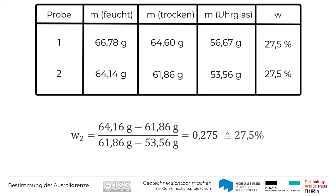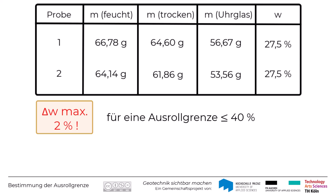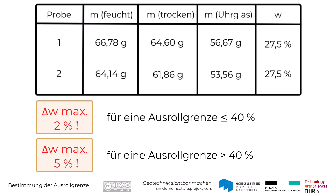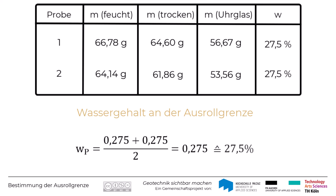Die für die beiden Teilproben ermittelten Wassergehalte dürfen absolut nicht mehr als 2 Prozent voneinander abweichen, zumindest dann, wenn der Wassergehalt an der Ausrollgrenze kleiner gleich 40 Prozent ist. Beziehungsweise sie dürfen nicht mehr als 5 Prozent voneinander abweichen, wenn der Wassergehalt an der Ausrollgrenze größer als 40 Prozent ist. Ansonsten muss der Versuch wiederholt werden. Wenn das nicht der Fall ist, berechnet sich der Wassergehalt der Ausrollgrenze Wp als Mittelwert aus den beiden Einzelwassergehalten des Ausrollversuchs.